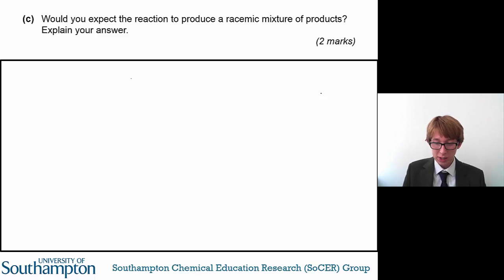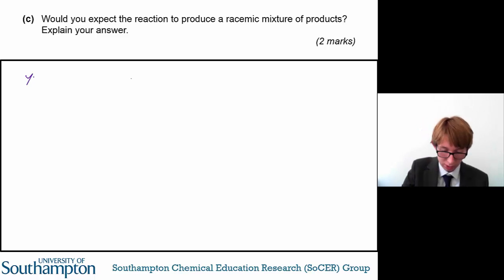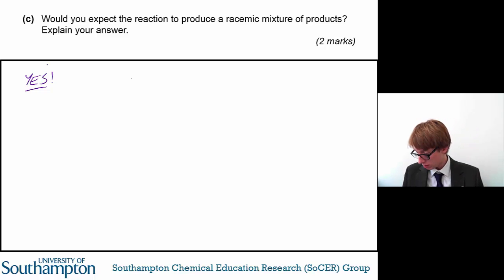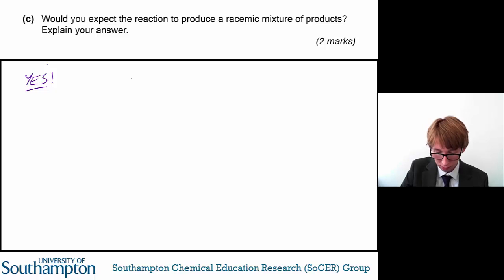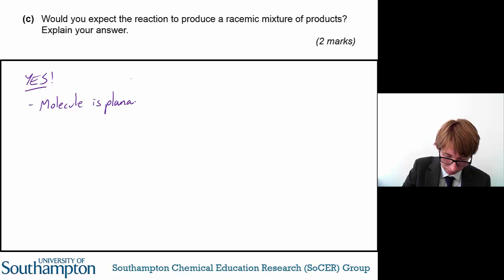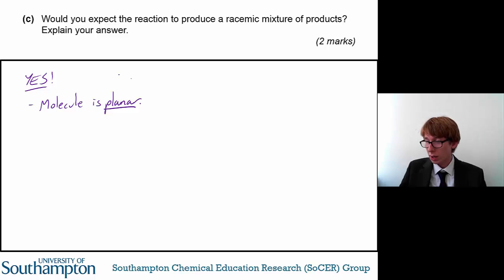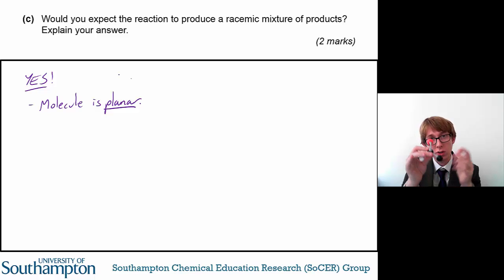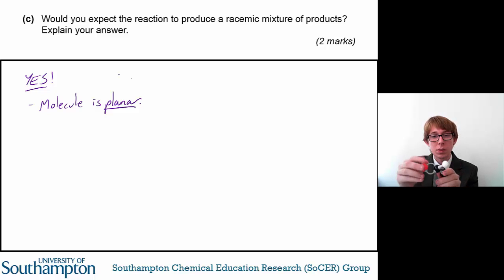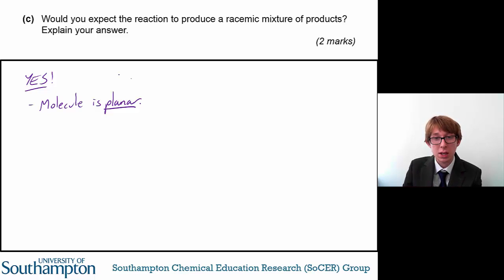The final part of the question asks: would you expect the reaction to produce a racemic mixture of products? The answer is yes. The starting molecule is planar. Around this carbonyl group (C=O), you have a planar molecule, and this means that a reaction is equally likely from both sides — equally likely from the top and equally likely from the bottom.